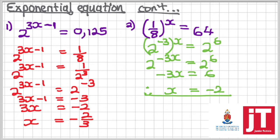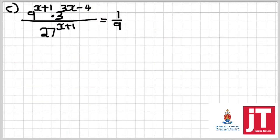We move on to the third and last question. We're given 9 to the power x plus 1 times 3 to the power 3x minus 4, all over 27 to the power x plus 1, is equals to 1 over 9.